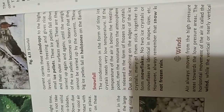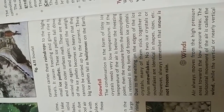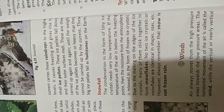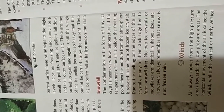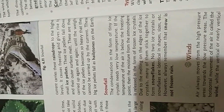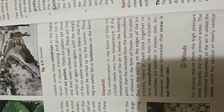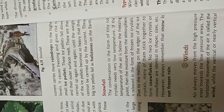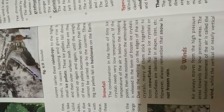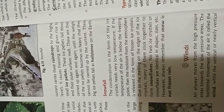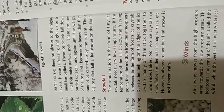So next is snowfall. The condensation in the form of tiny ice crystals needs very low temperature. When the temperature of the air is below the freezing point, moisture from the atmosphere is released in the form of frozen ice crystals. Due to the melting of the edges of the ice crystals, they stick together and form snowflakes.